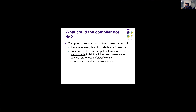Since the compiler doesn't know the final memory layout of the executable, it assumes every segment starts at address zero. It creates an object file with all segments starting at address zero, then creates a symbol table for the linker listing all symbols in the object file. It also has relocation information — a command for the linker to fix all references within the object file.